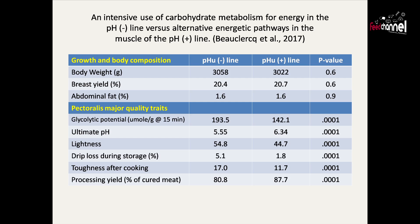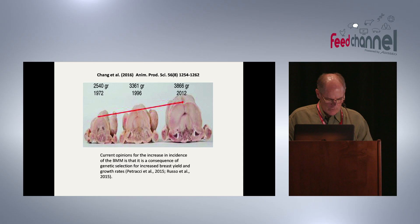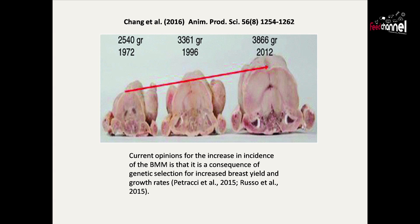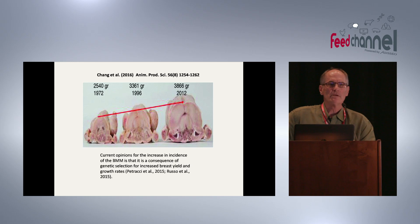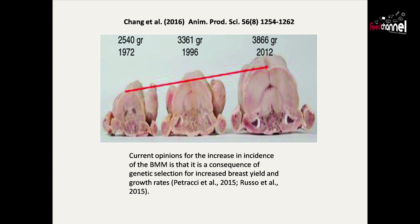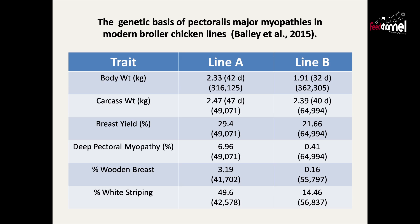I want to transition now — a picture's worth a thousand words. You can easily see the genetic increases in carcass yield over time, and the somewhat disproportional increase in the pectoralis major. At the bottom of this slide is one of the current hypotheses from Petracci and Russo, 2015: that the increase in incidence of breast muscle myopathies is a result of selection for body weight and extremes in breast muscle phenotype. This was followed by a paper by Bailey in 2015.